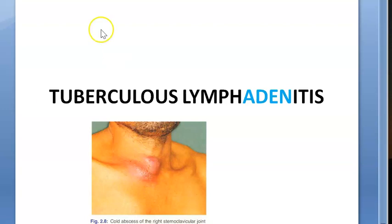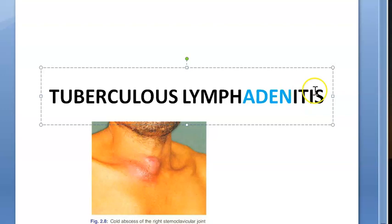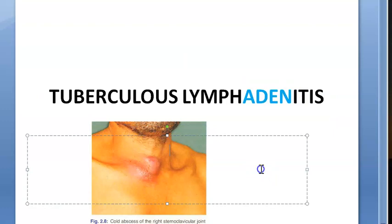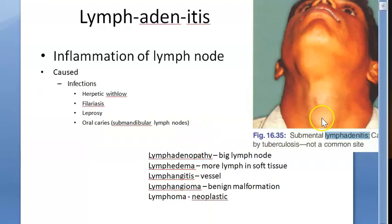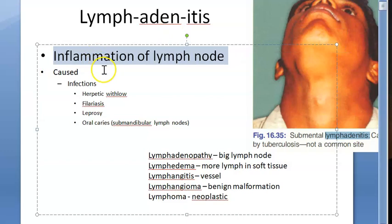In this video we are looking at tuberculosis lymphadenitis. Breaking this up: 'itis' means inflammation, and 'lymphaden' refers to the lymph node. So basically, lymphadenitis means inflammation of the lymph node.